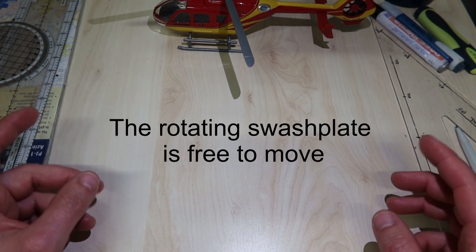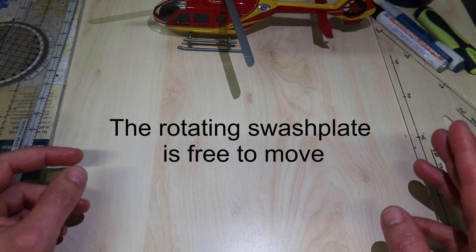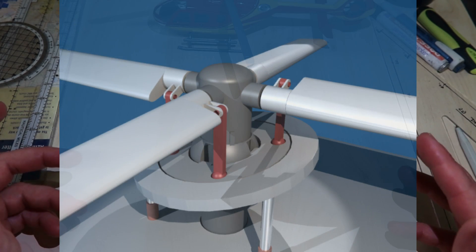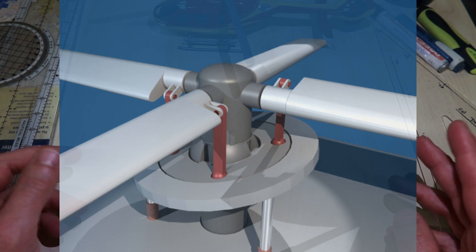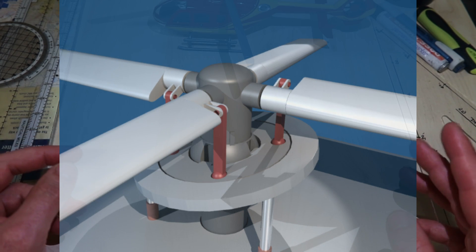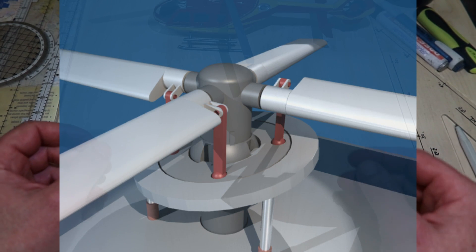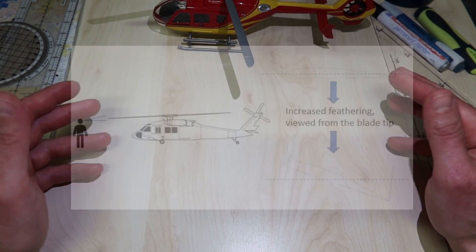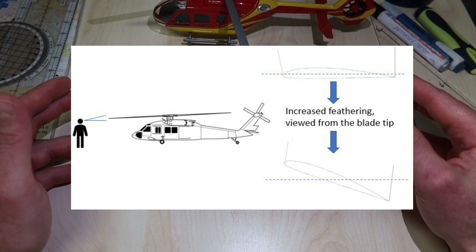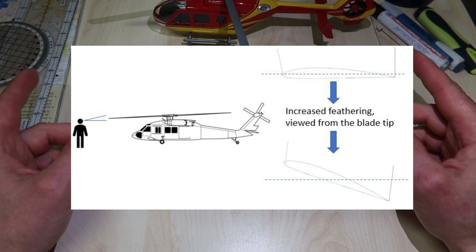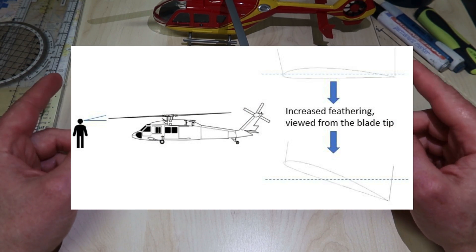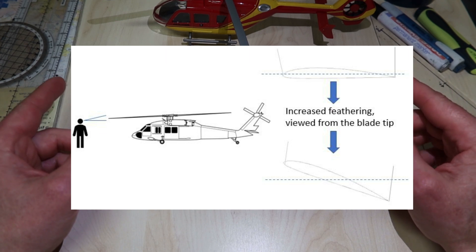Its vertical position and angle of tilt exactly match the vertical position and angle of tilt of the non-rotating swash plate. Changes in tilt angle apply different amounts of pitch change to each blade. Changes in vertical position apply an equal amount of pitch change to all blades.